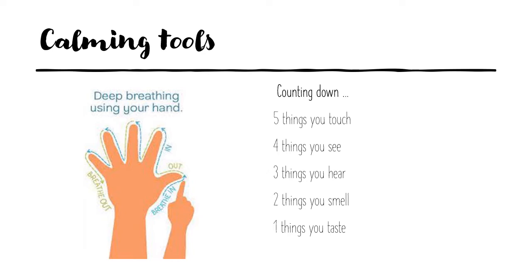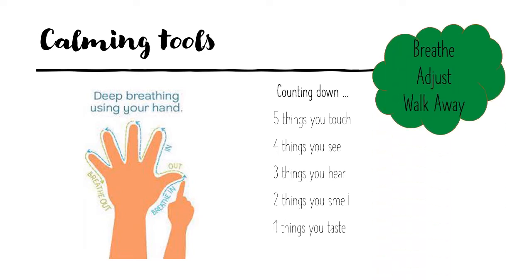The third calming tool we share today is called Breath, Adjust, and Walk Away. Breath: a few big slow breaths can bring your body back into a state of relaxation. Adjust: lower your shoulders, clench your fists, relax your face and facial muscles — this can help loosen anger from the body. Walk Away: stepping away from the action is a great way to diffuse a tense situation — go for a walk and gather your thoughts.